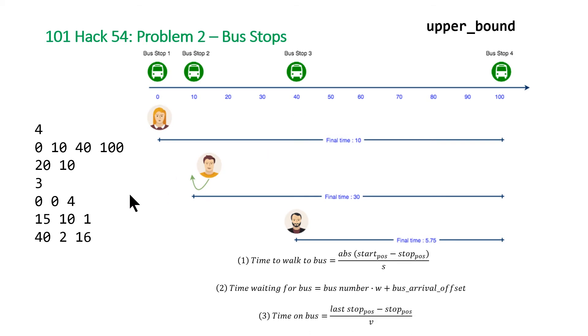The third thing we need to calculate is the time spent on the bus, and this one's pretty straightforward. We take the position of the last stop, which will be 100, subtract from it the position of the bus stop, and divide that by the speed of the bus which is v.